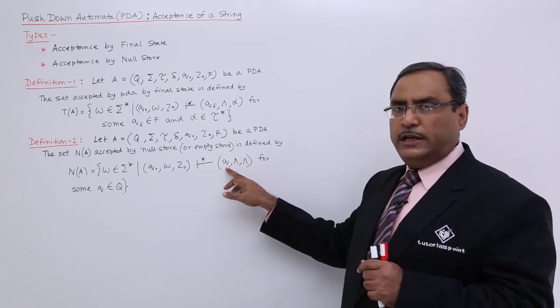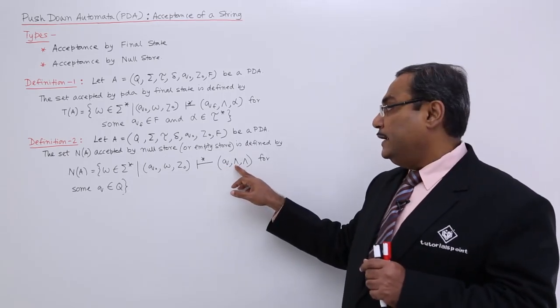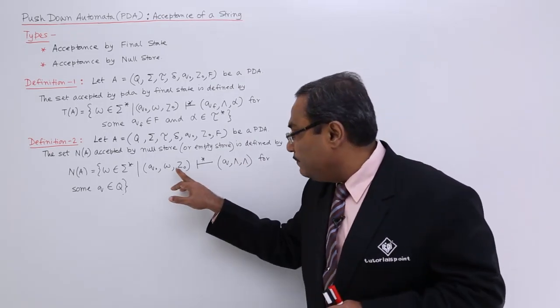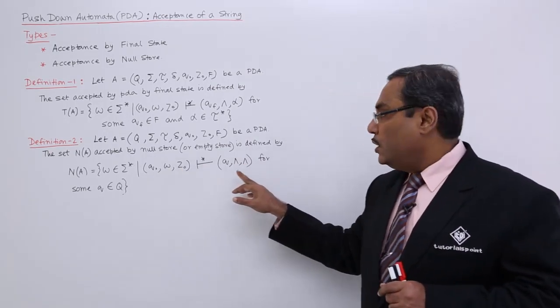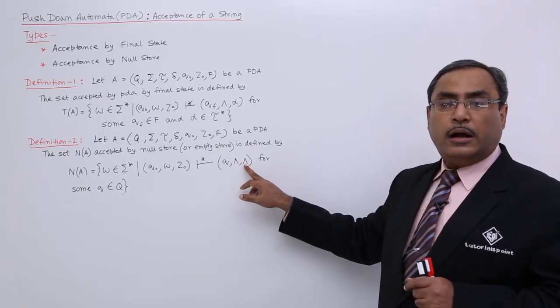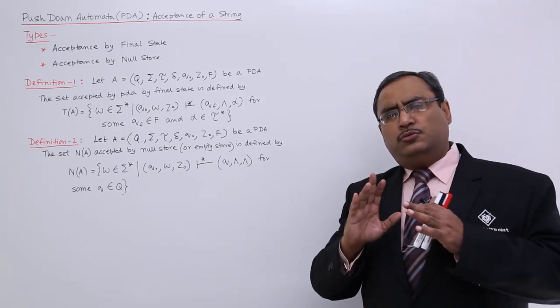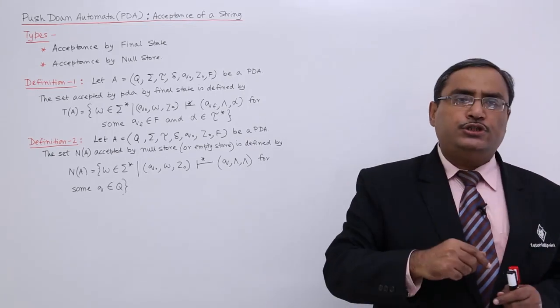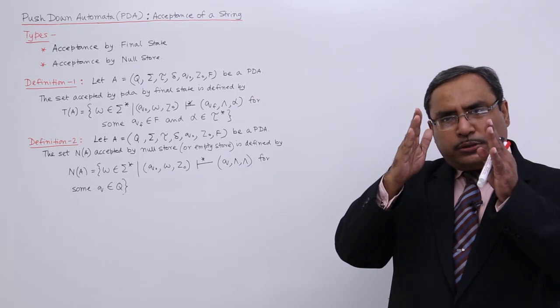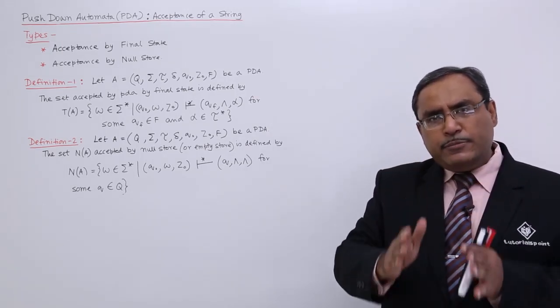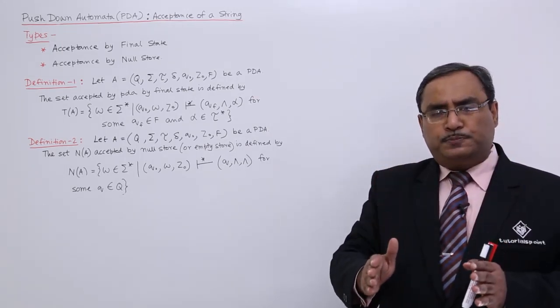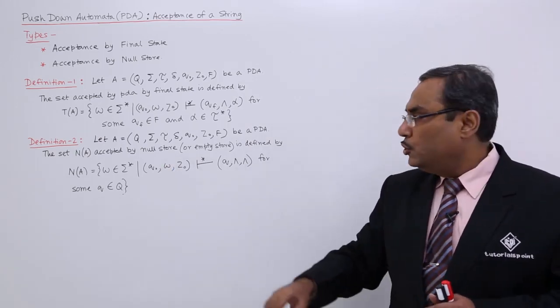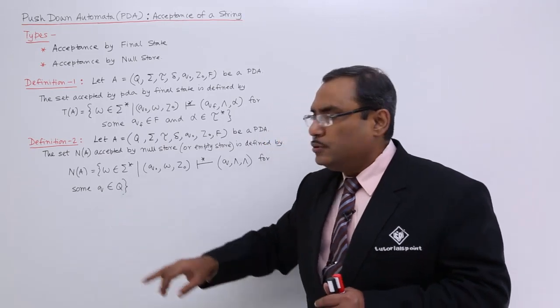It is not mandatory. But the input string should be read completely and the stack will become empty. Here I have shown Z₀, and here kappa - that means all the pushdown store symbols will be popped out along with Z₀. When the pushdown store becomes empty, when it becomes the null store, then it will accept this particular string W for some Q belongs to Q.